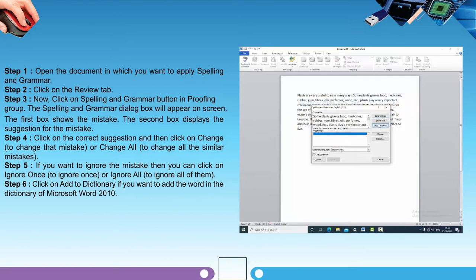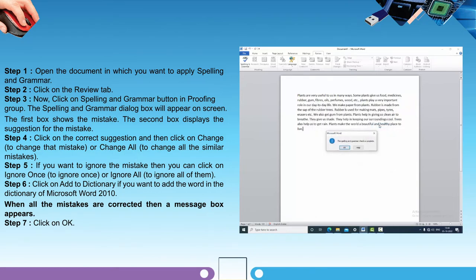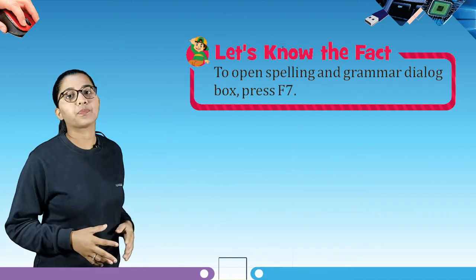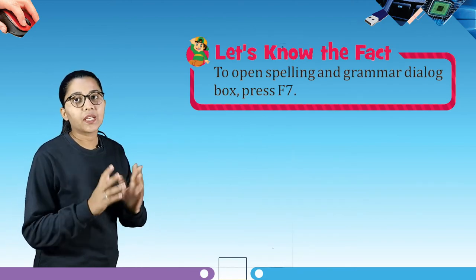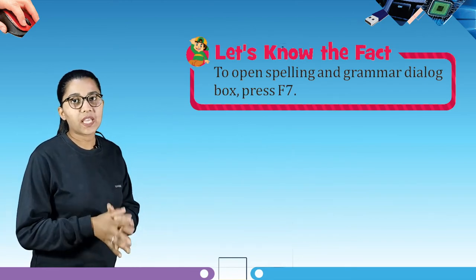Step six: click Add to Dictionary if you want to add the word to the dictionary of Microsoft Word 2010. When all the mistakes are corrected, a message box will appear. Step seven: click OK. Before we jump to our next topic, an interesting fact — to open the Spelling and Grammar dialog box, press F7.